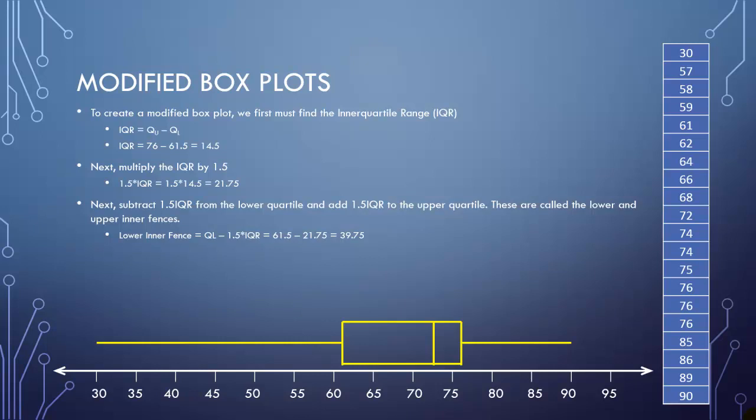So what that's going to construct is what's called the lower inner fence and the upper inner fence. The lower inner fence is going to be the lower quartile minus 1.5 IQR, which gives us 39.75. We can just plot that with a dotted line to mark it off on the graph. We'll do the upper inner fence in the same way. Just take that 1.5 IQR, but add it to the QU part, and that gives us 97.5.